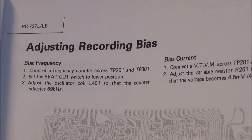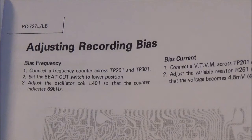I have the service manual printed out and I've got a pretty clear set of instructions. I'm supposed to connect a frequency counter across TP201 and TP301, set the beat cut switch to the lower position, and adjust the oscillator coil L401 so that the counter indicates 69 kilohertz.